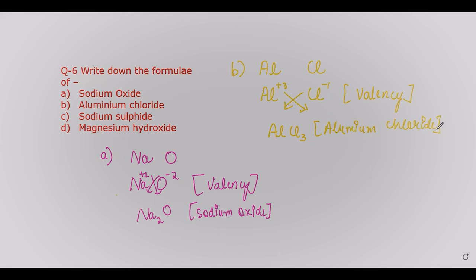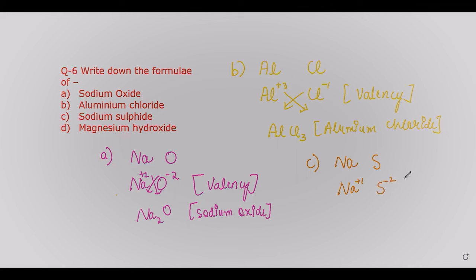For sodium sulfide: do not confuse sodium and sulfur symbols. Sodium is Na and sulfide is S. Add valencies: sodium has +1 and sulfur has −2. After cross-multiplying, the formula becomes Na₂S, which is sodium sulfide.